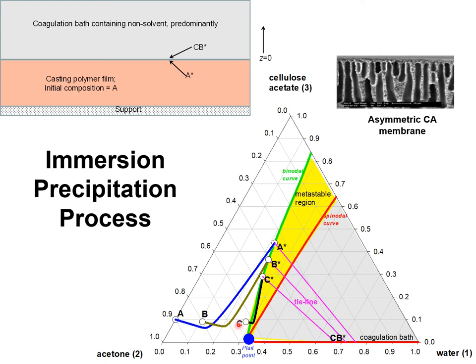What is interesting to note is that the trajectory C-star, where C-star is the composition at the interface between the casting film and the coagulation bath, the trajectory C-C-star has experienced a foray into the metastable region. This foray into the metastable region causes precipitation of cellulose acetate and the formation of the asymmetric cellulose acetate membrane as shown in this photograph.